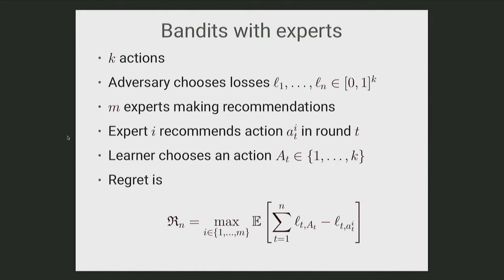At the beginning of each round you ask all the experts what they think you should do, and they tell you: expert i says you should play action a_i(t) in round t. Then you get to make a decision, choosing from one of the K actions. The regret is now measured with respect to the best expert in hindsight — the max over all experts — rather than actions. This allows us to move away from competing with just the best action in hindsight and instead compete with the best expert, which handles non-stationary or combinatorial settings.